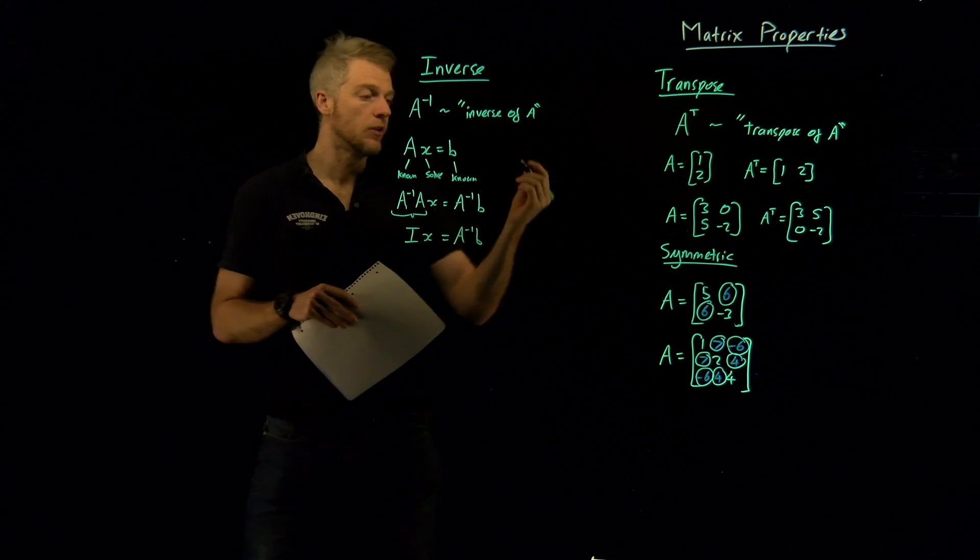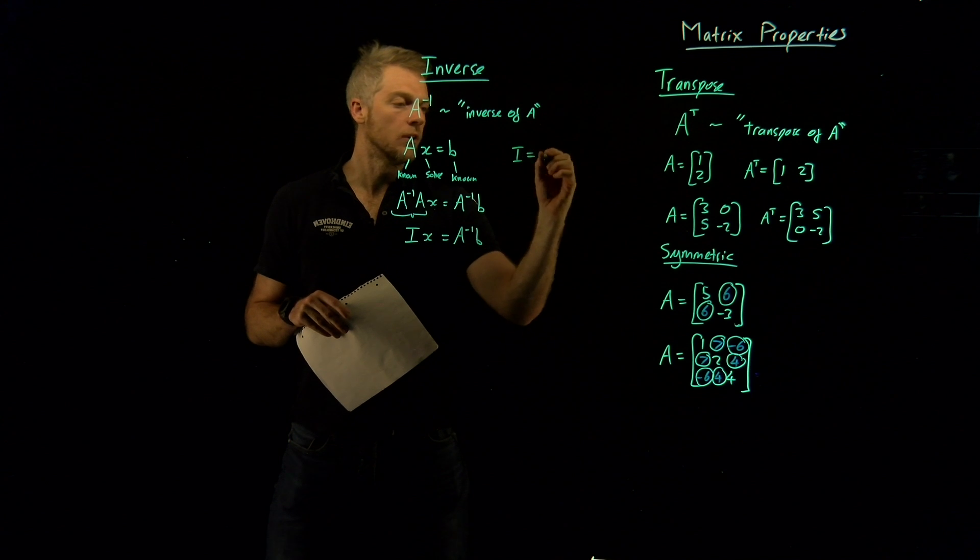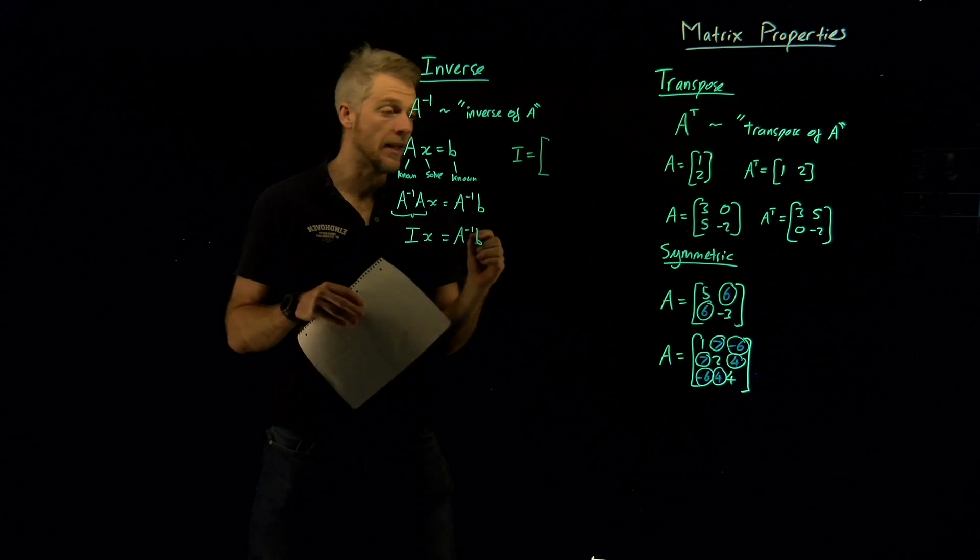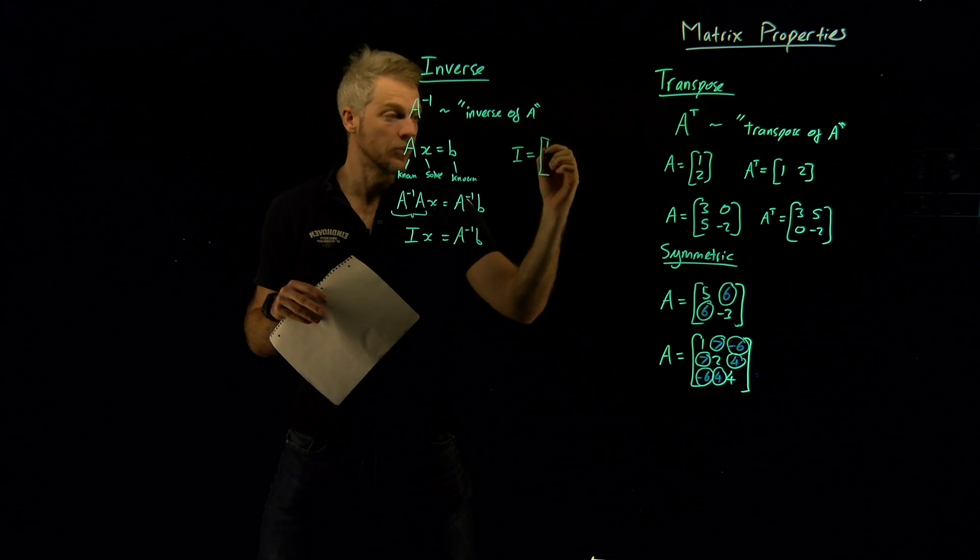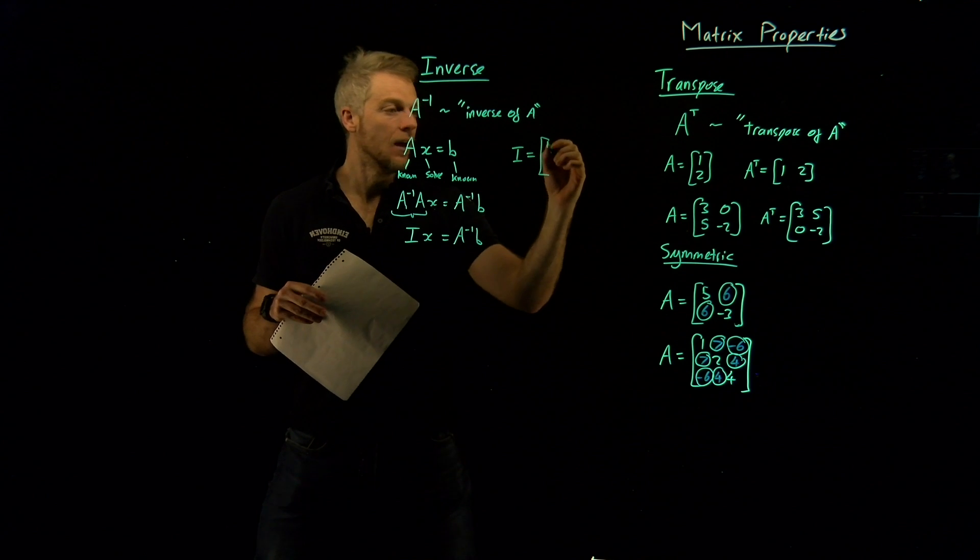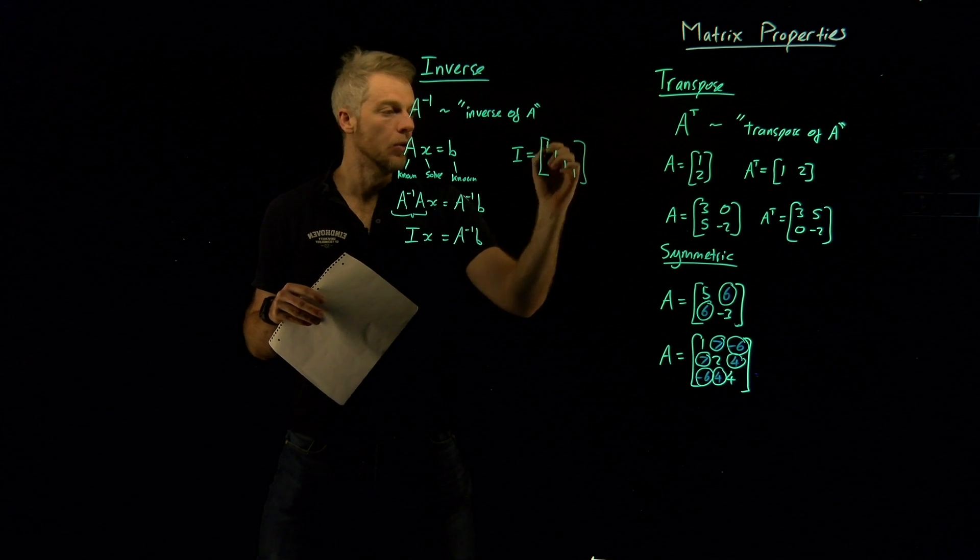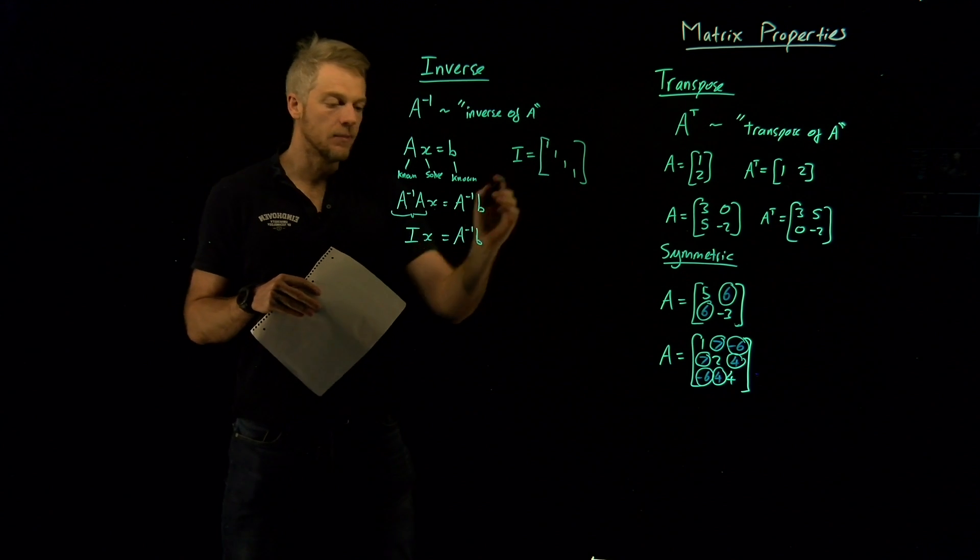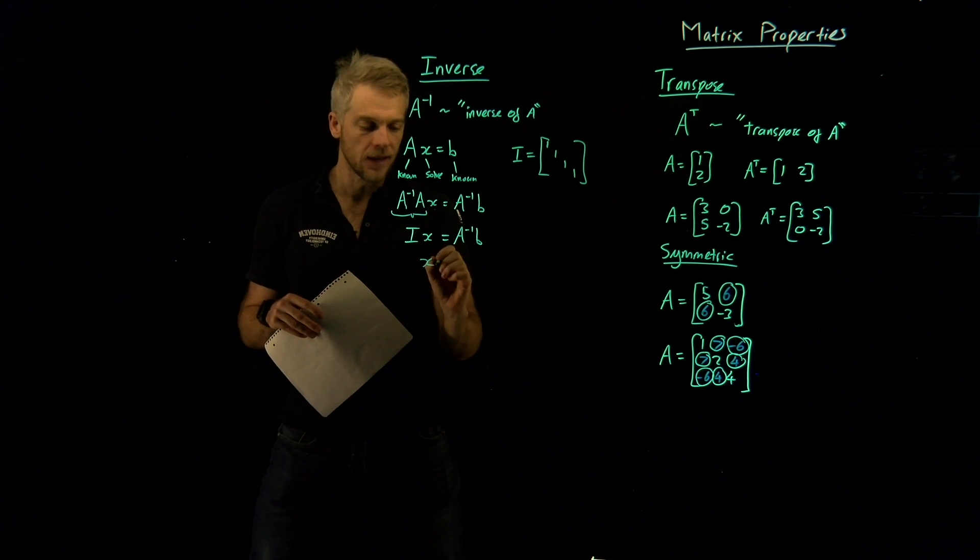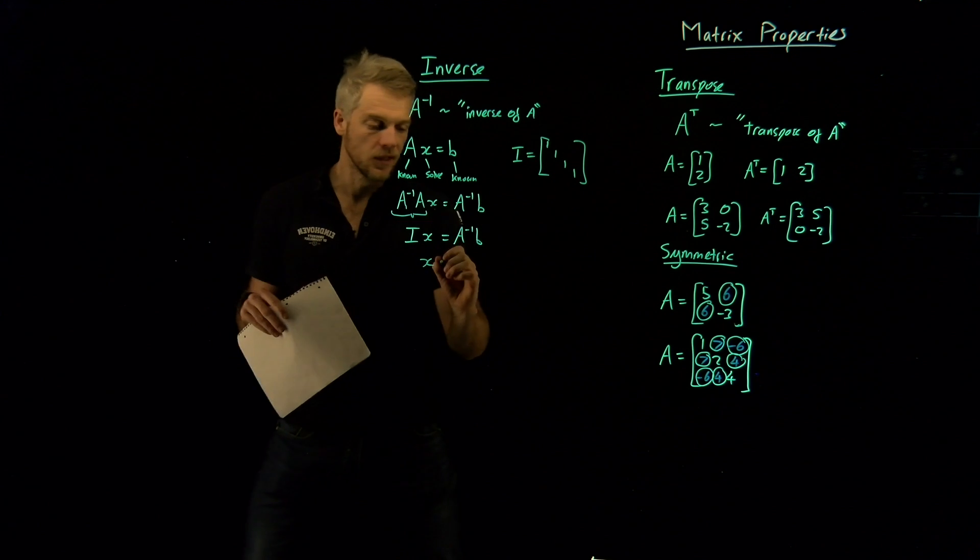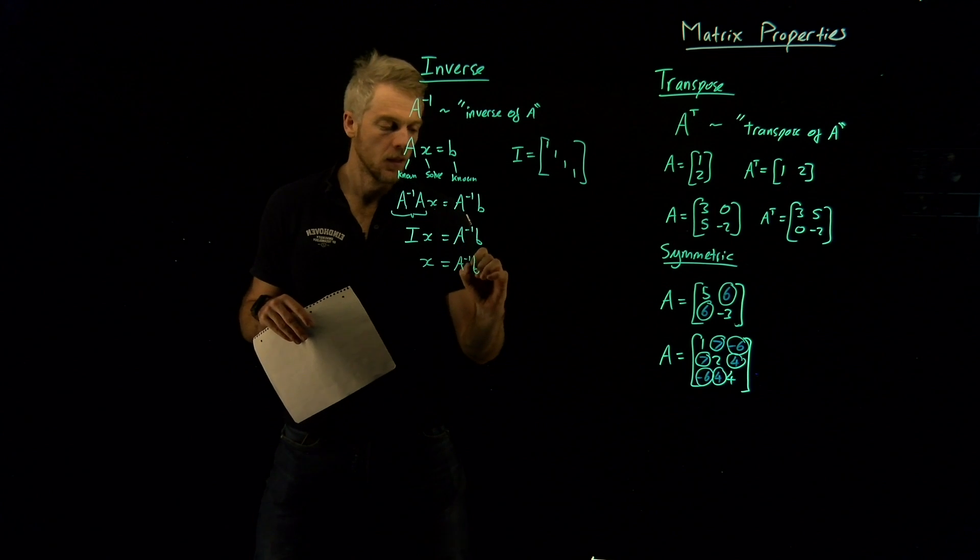Now, I haven't talked about the identity matrix, so let me actually just quickly draw it here. The identity matrix is a very special, and perhaps the best quality matrix you can ever have. It's symmetric, it's orthogonal, it's fantastic. It's just a whole bunch of ones along the diagonal, and zeros everywhere else. So this is the identity matrix. And one of the properties of the identity matrix is that if you multiply it by X, you just get X. So that's nice. So that means we can now find our value X, and we know that's just equal to A inverse B.